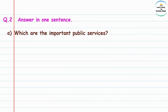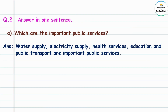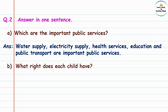Question number two: answer in one sentence. (a) Which are the important public services? Answer: Water supply, electricity supply, health services, education, and public transport are important public services. (b) What right does each child have?